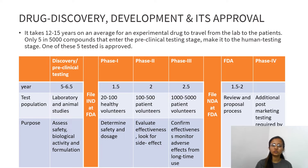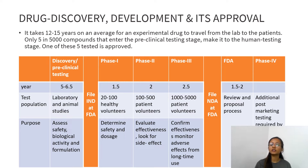After preclinical testing, an IND application is filed with the FDA, then Phase 1 trials begin. Phase 1 takes 1.5 years with 20 to 100 healthy volunteers to determine safety and dosing. Phase 2 takes 2 years with 100 to 500 patient volunteers to evaluate effectiveness and look for side effects. Phase 3 takes 2.5 years with 1,000 to 5,000 patient volunteers to confirm effectiveness and monitor adverse effects from long-term use. After Phase 3, an NDA is filed with the FDA, which takes 1.5 to 2 years for review and approval. After FDA approval, Phase 4 — also called post-marketing — begins.